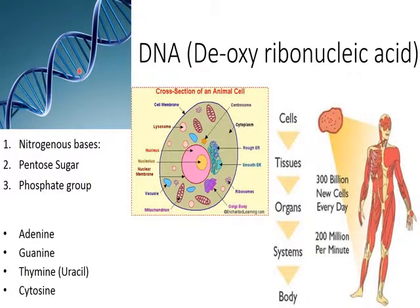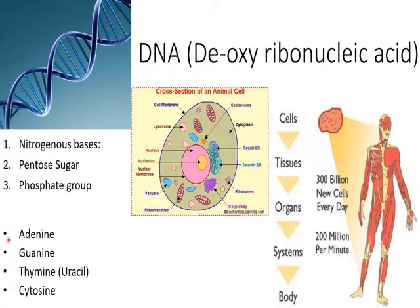Now let us look at the structure of DNA. DNA is a three-dimensional structure containing nitrogenous bases, a pentose sugar, and a phosphate group. The nitrogenous bases are the major controlling factors of DNA. The four nitrogenous bases in DNA are adenine, guanine, thymine, and cytosine. DNA is simply a sequence of these nucleotides, and different sequences control the functioning of different organs and cells.